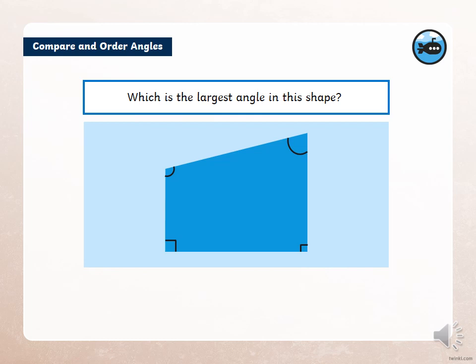So remember to ignore the sizes of the curves inside the shape because that's to trick you. So just because the curve in the top right hand corner is bigger than the curve in the left hand corner of the shape, it doesn't mean that that angle is bigger. Okay so pause the video and have a go at this.